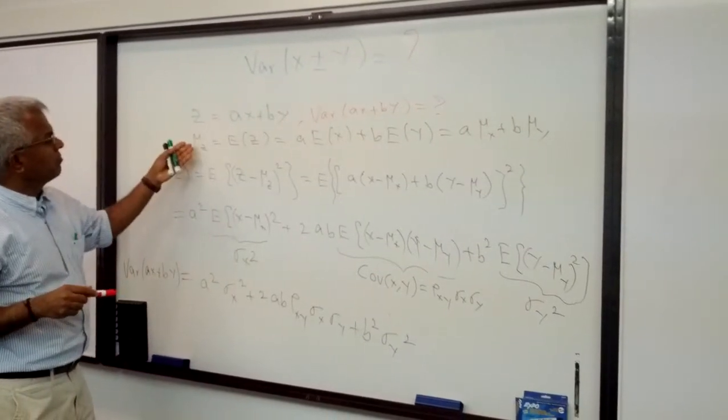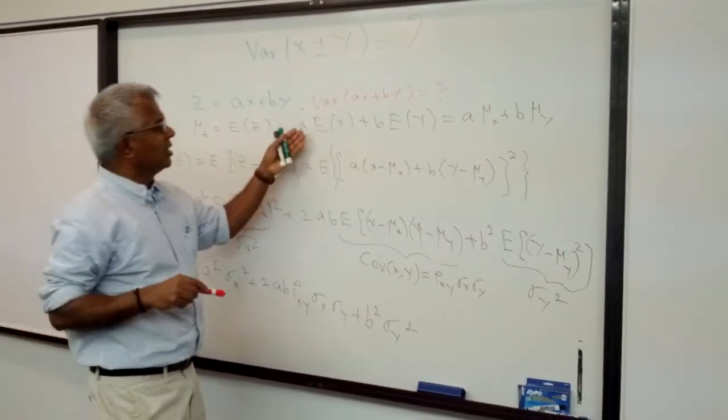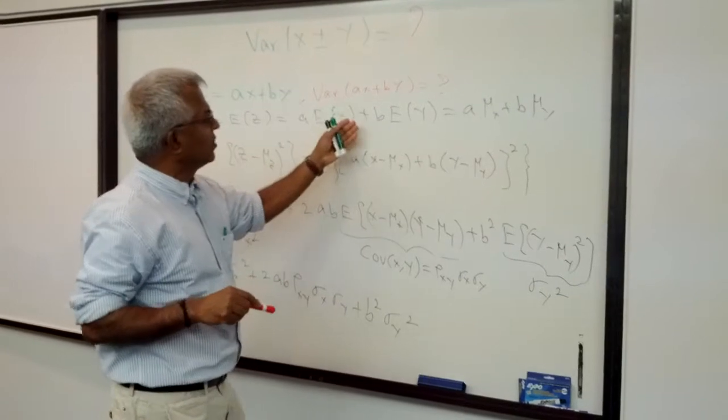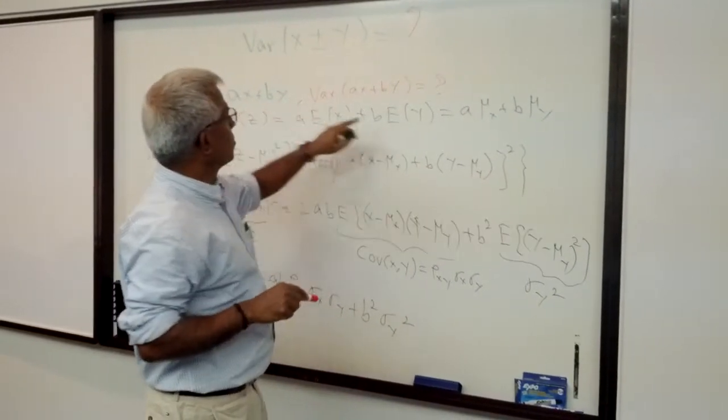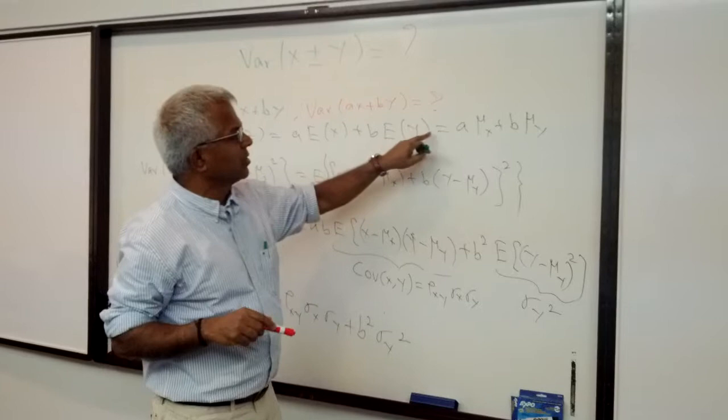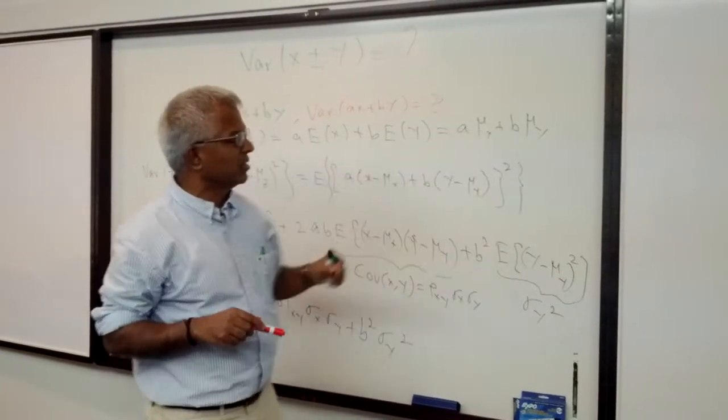So the mean of Z is A multiplied by mean of X, plus B multiplied by the expected value, the mean of Y. So that's this.